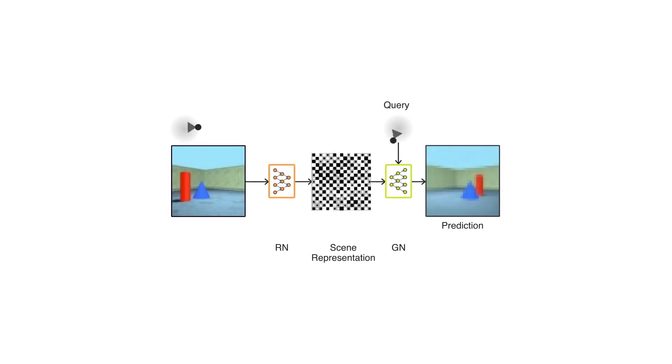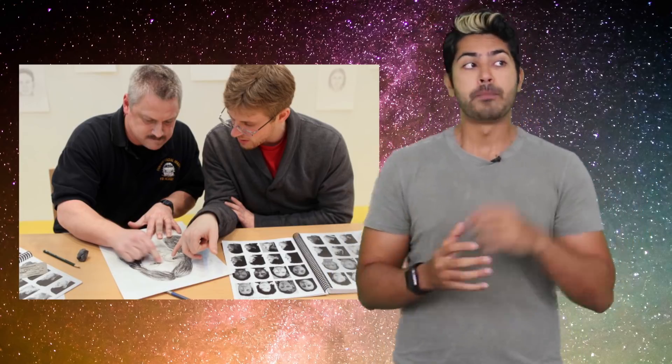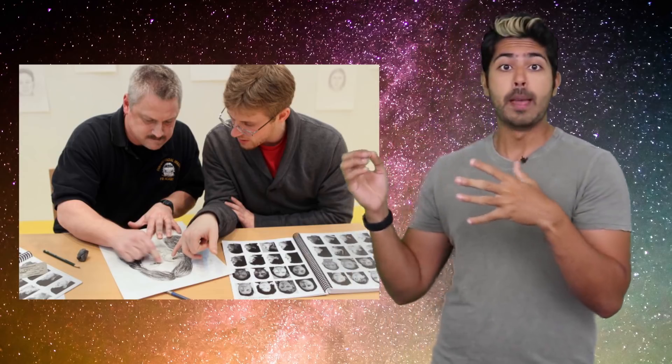I'd liken the relationship between these two networks to the relationship between a crime scene witness and a sketch artist. The witness remembers fragments of a criminal, their height, their hair color, their choice of Linux distro, and the sketch artist must discern the full picture of the criminal based on a few details, inferring the likely other traits based on what they're given by the witness.